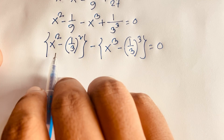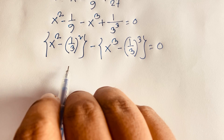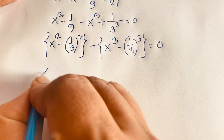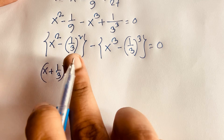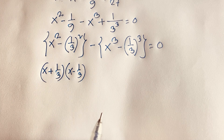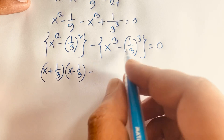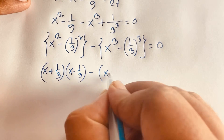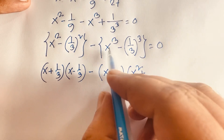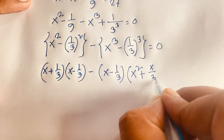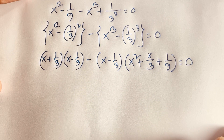Using the identity a squared minus b squared equals (a plus b)(a minus b), we get (x plus 1/3)(x minus 1/3). Using a cubed minus b cubed equals (a minus b)(a squared plus ab plus b squared), with b equal to 1/3, we get (x minus 1/3)(x squared plus x over 3 plus 1/9) equals 0.